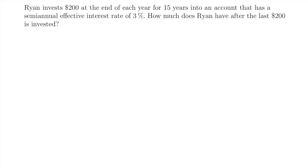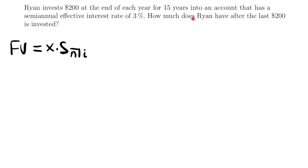The notation for the future value of an annuity is S, then N for our number of periods, and then I for our interest rate for the scenario. We multiply this by some payment X that isn't going to change over the course of that time period — we are depositing or investing the same amount every time over the span of those N number of periods. Let's write down everything we know for this scenario, and then we'll use this formula for the future value of an annuity.